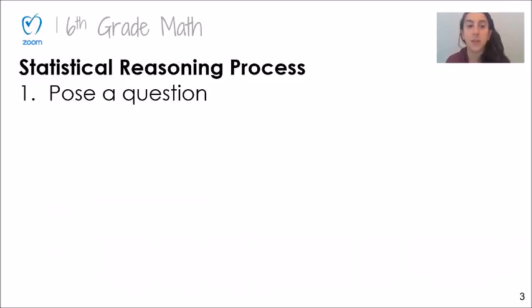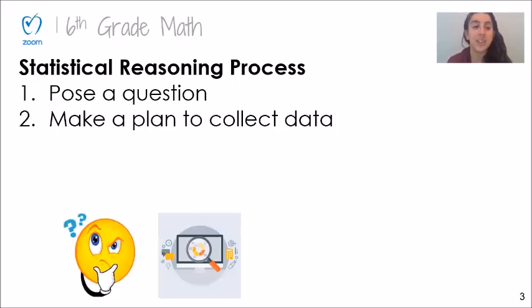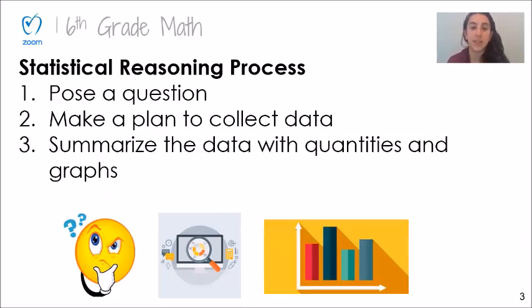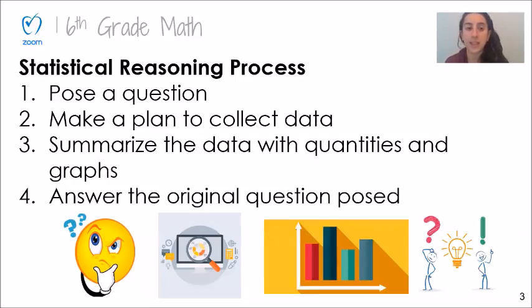The statistical reasoning process consists of four major steps. The first is to pose a question and that's what we're going to dive into today. The second is to make a plan to collect data. The third is to summarize the data with quantities and graphs, and then lastly we answer the original question posed.